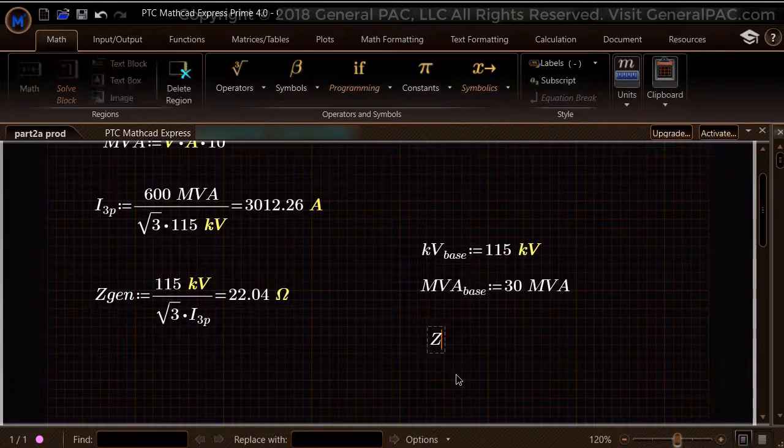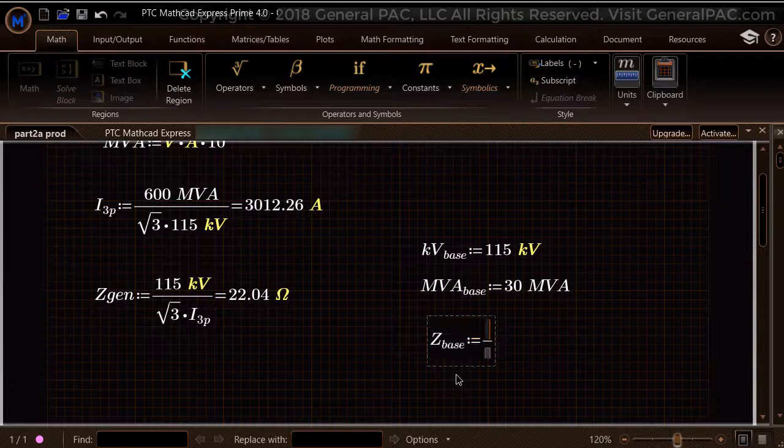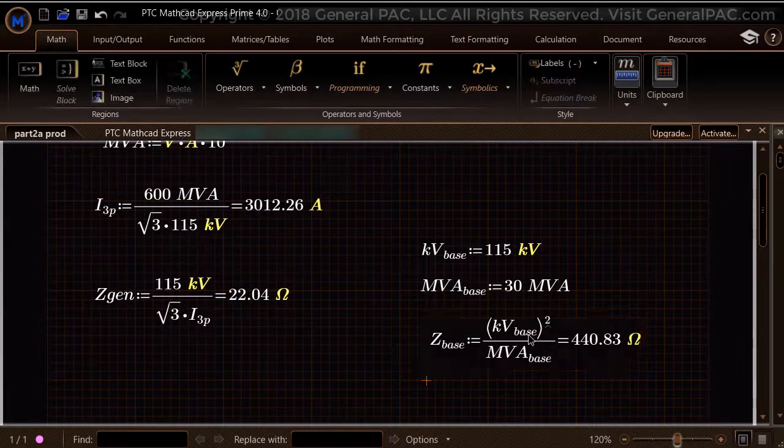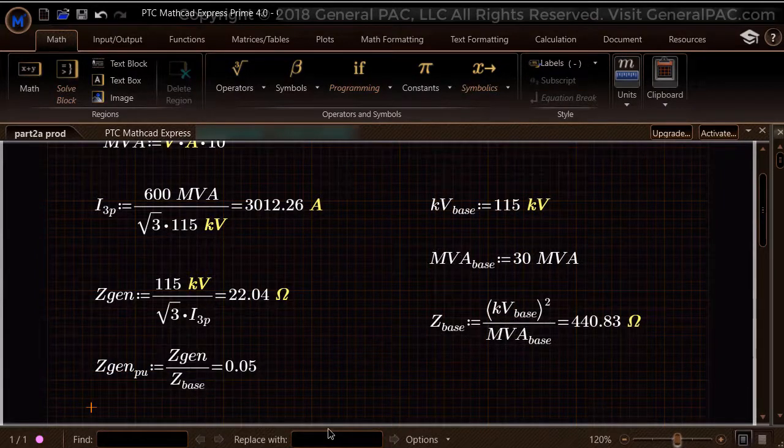Now let us convert the 22.04 ohms to a per unit base. The impedance base is simply the base voltage squared divided by the power base. To convert the impedance value to a per unit value, we simply divide the given impedance by the impedance base, which now equals 0.05.